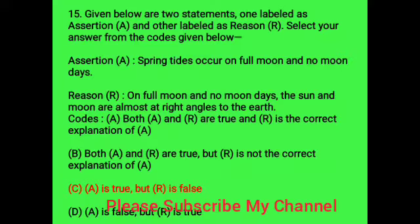Question fifteen is an assertion-reason question. Assertion: spring tides occur on full moon and new moon days - that is absolutely true. Reason: on full moon and new moon days, the Sun and Moon are almost at right angles to the Earth - that is absolutely incorrect. So option C is correct.